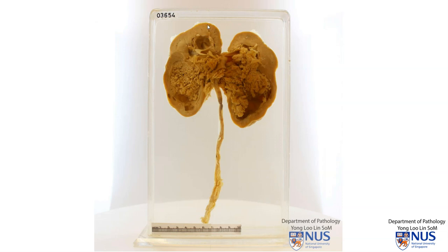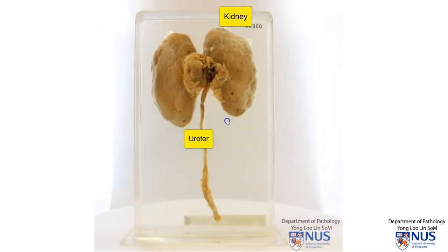Hello, this is a gross specimen of a kidney that has been bivalved, along with the proximal ureter. Looking at the capsular surface of the kidney, this is the hilar fat. Sometimes we may get some lymph nodes in this region, and again the proximal ureter.